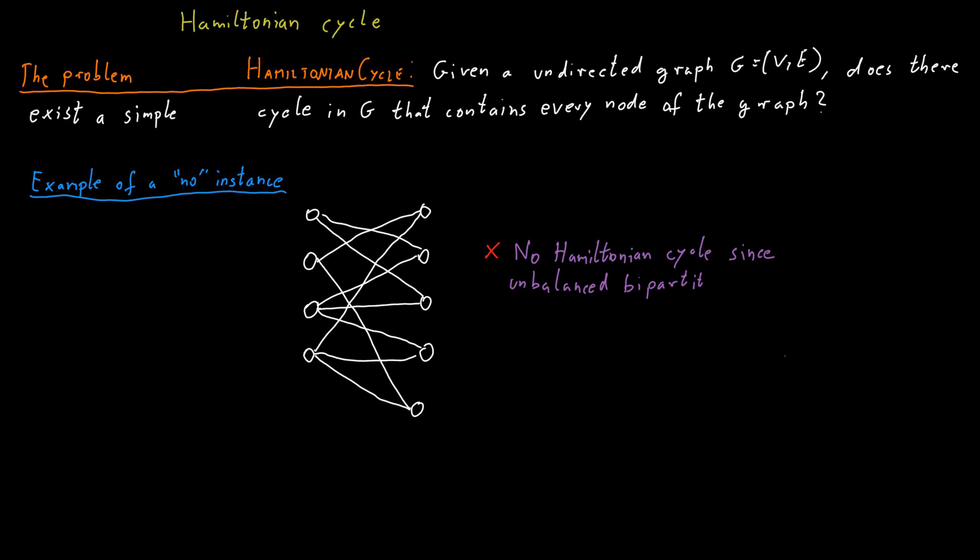Therefore it cannot contain a Hamiltonian cycle because a Hamiltonian cycle would have to alternate between the left side of the graph and the right side of the graph, and it's not possible to do this if the number of nodes is odd.